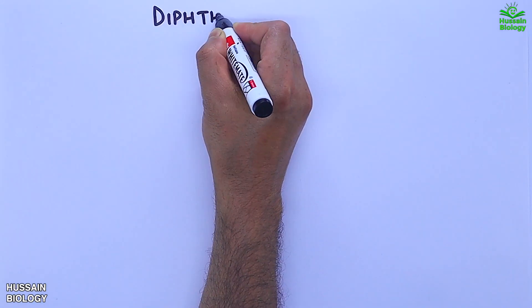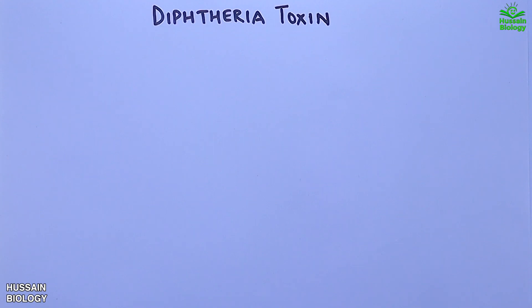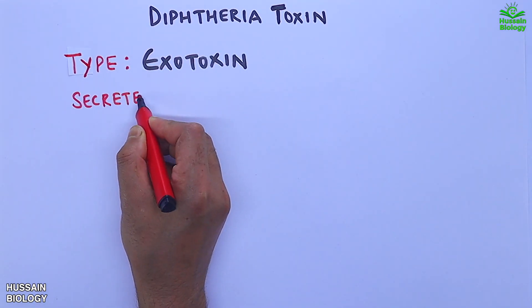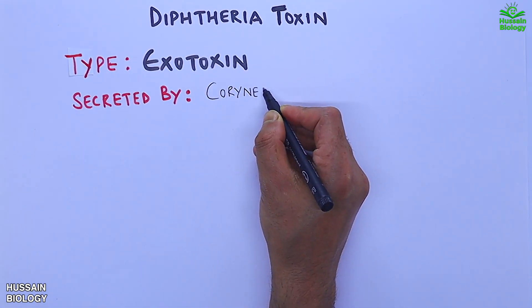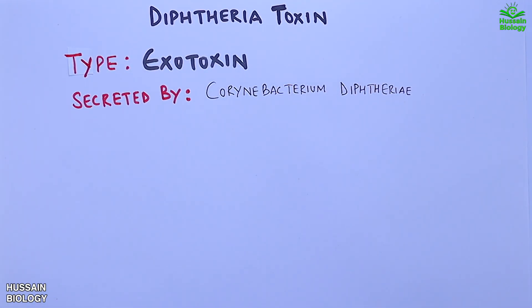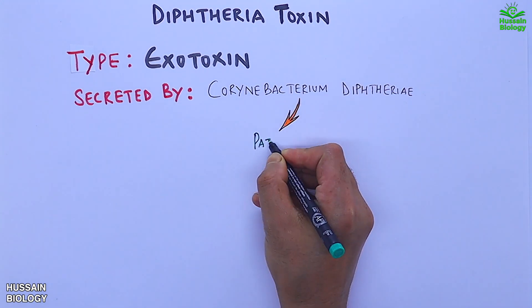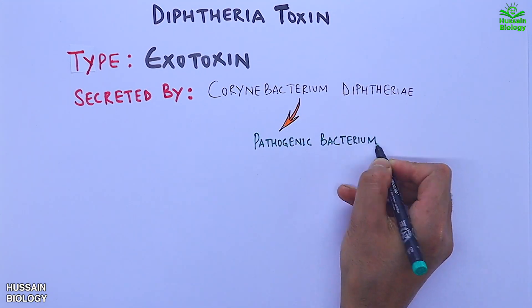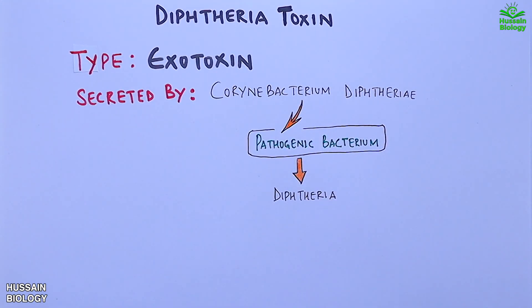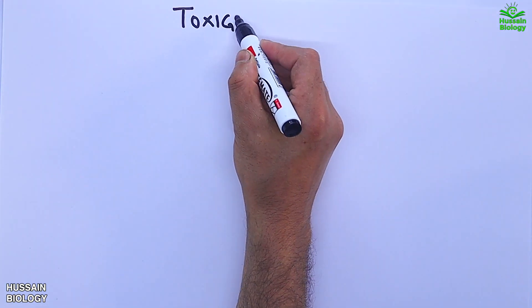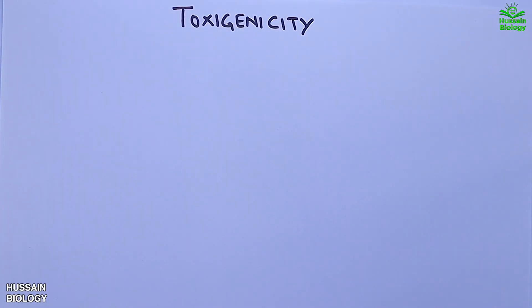In this video we will be discussing the diphtheria toxin. It is a type of exotoxin secreted by Corynebacterium diphtheriae, a pathogenic bacteria that causes diphtheria, which usually involves mucous membranes of the nose and throat initially.